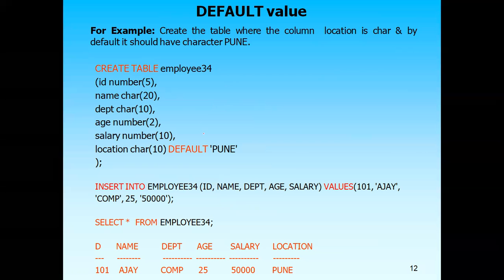Here is the example of how you can set a default value. We have declared the table and for the location field, by default we want to set it to 'Pune'. After declaring the field, you mention 'default' — that is the keyword — and after writing 'default', you give a space and in single quotes, if it is a string value, you write that value: 'default ''Pune'''. This will set 'Pune' as a default value for the location field.